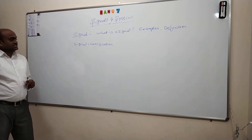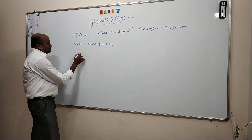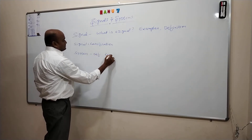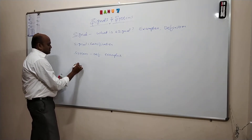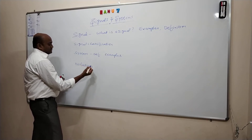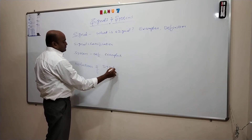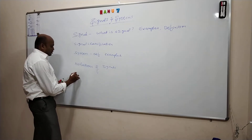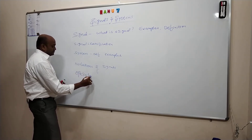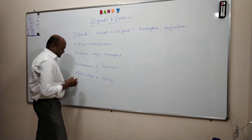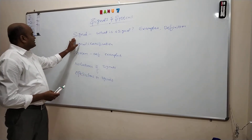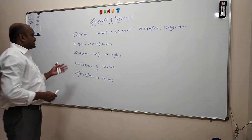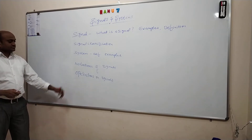We will see signal classifications, then we will see system definition and examples. We will see notations of signals, then we will see operations on signals. So this is the agenda for the discussion in the introduction video. We are going to see what is the signal, what are the classifications of signal, what is the system and its definition, what are the examples of the system, and then what are the notations of signals and operations on signals.